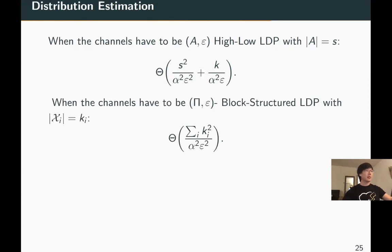For block-structured LDP, with each block size being k_i, we establish the following sample complexity. More specifically, when all blocks have the same size of k over m, the sample complexity is reduced by a factor of m compared to the classic LDP case. The results are summarized in this table.